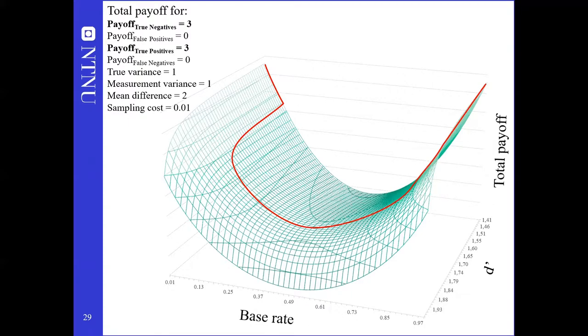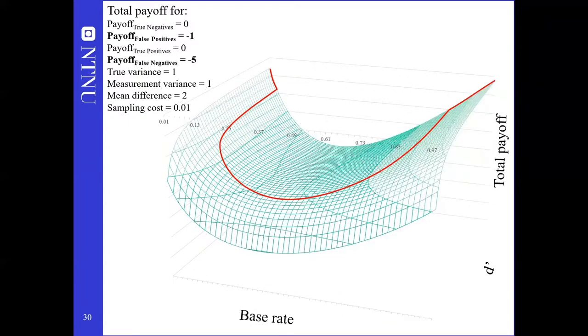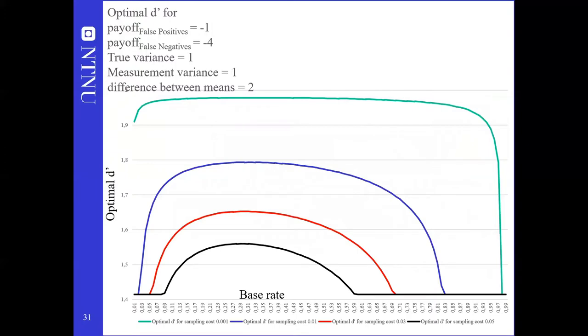Next, we're going to be looking at the optimal d' for scenarios where payoff is not symmetrical. This is what that graph looks like. Notice the transformation of the curve. Here we see how false negatives being four times as important as false positives skews sampling toward lower base rates. Otherwise, the pattern is much the same as before.